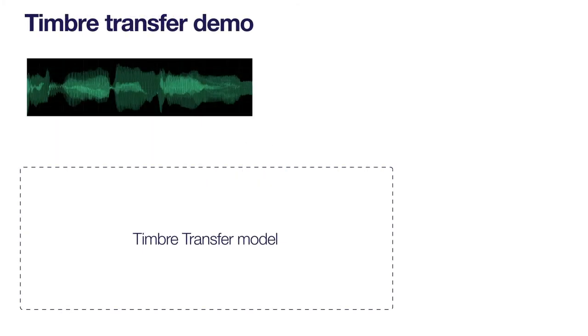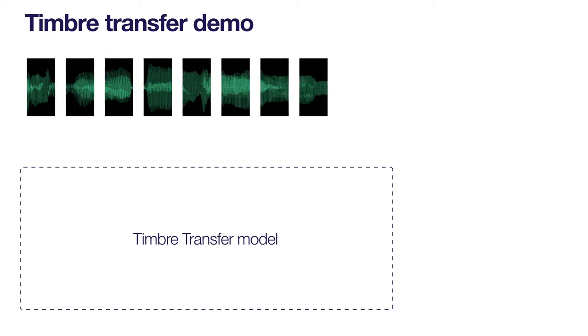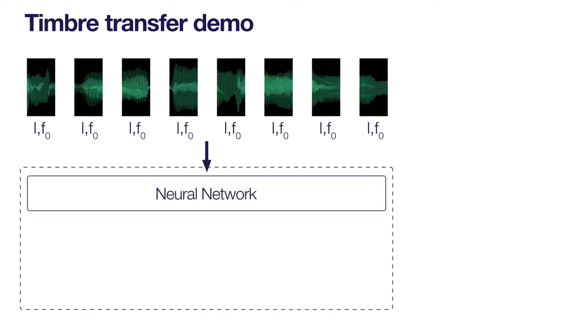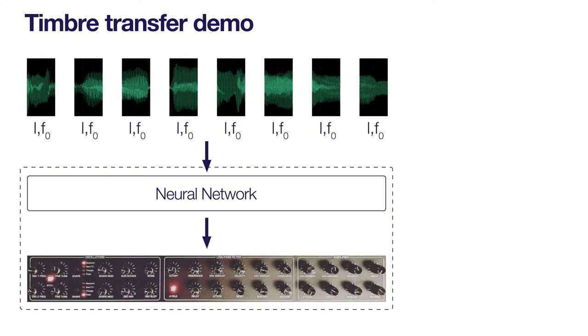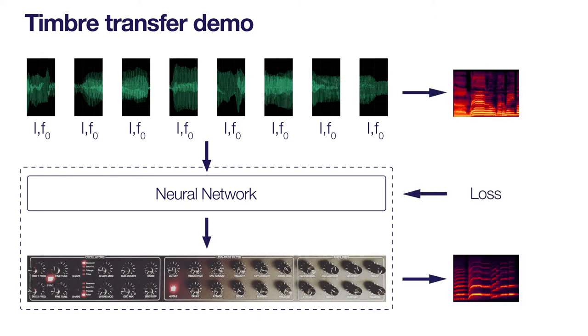The timbre transfer demo is used as the basis of our work. In this demo, audio from a monophonic instrument is split into small chunks of 4ms. For each chunk, loudness and fundamental frequency are extracted and used to train a neural network. The network outputs the controls for a spectral synth. The loss function compares the spectrogram of the original chunk with the spectrogram of the output of the synth. The error is then used to adjust the weights using backpropagation.